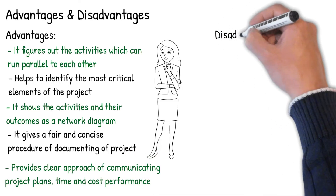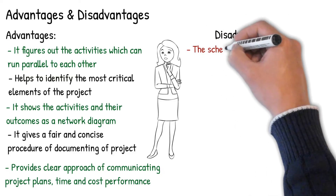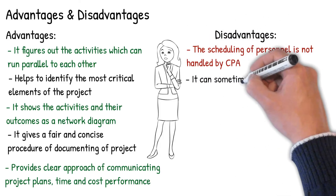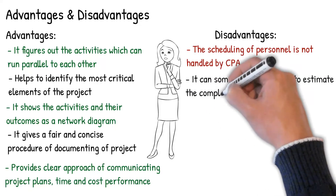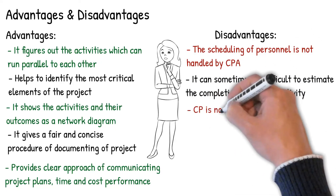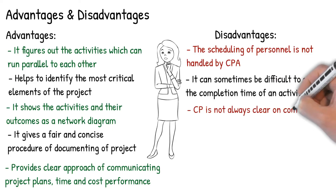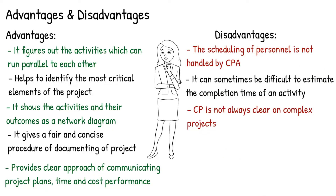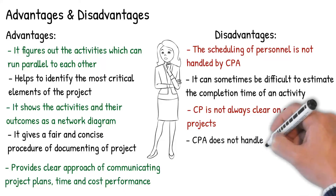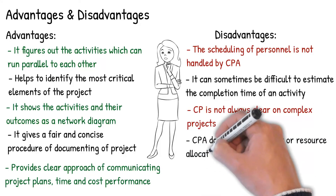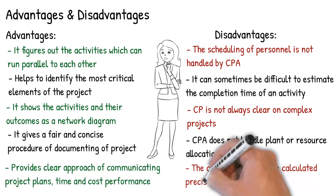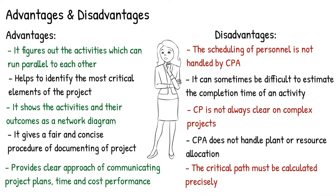Disadvantages: The scheduling of personnel is not handled by the critical path analysis. In CPA, it can sometimes be difficult to estimate the completion time of an activity. For extremely complex and large projects, the critical path may not always be clear. It does not handle the scheduling of the plant or resource allocation. And for CPA to be an effective and useful tool to project managers and quantity surveyors, the critical path must be calculated precisely.